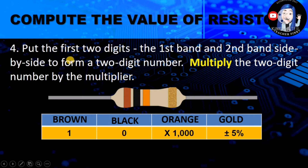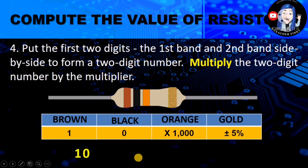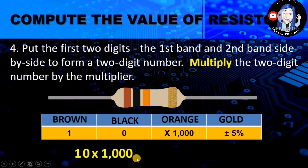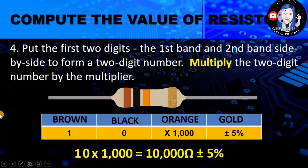The next step: put the first two digits together — the first band and the second band side by side to form a two-digit number. Then multiply the two-digit number by the multiplier. So 1 and 0 together become 10, multiplied by 1,000. The answer is 10,000 ohms plus/minus 5%. So for brown, black, orange, gold, the value would be 10,000 ohms plus/minus 5%.